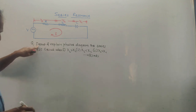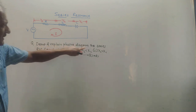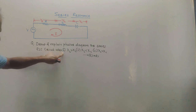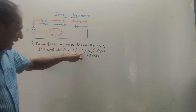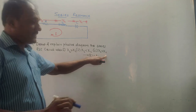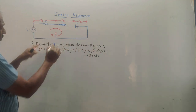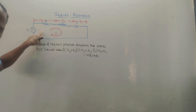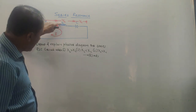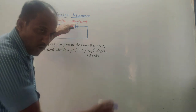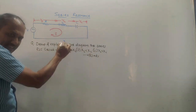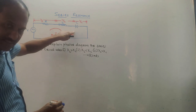The first expected question is: draw and explain the phasor diagram for a series RLC circuit when XL is greater than XC, XL is less than XC, and the third condition is XL equals XC. This diagram is the series RLC circuit — R is resistor, L is inductor, C is capacitor — all three components are connected in series.